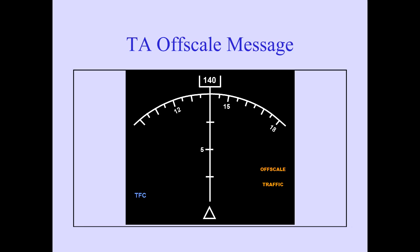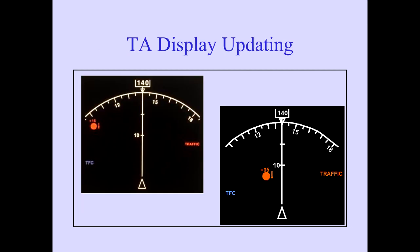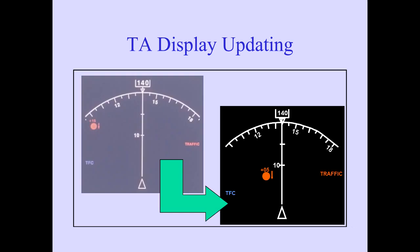The color depends on the type of advisory: RAs are red, TAs are amber. Increasing the ND range will display the intruder on the ND. The displayed position of the TA aircraft is updated continuously. This example shows an aircraft at 1030, bearing 100, range 18 nautical miles, which then progresses to 11 o'clock, bearing 120, range 9 nautical miles. The aircraft has descended from 1,500 feet above our altitude at 18 nautical miles to 500 feet above our altitude at 9 nautical miles. If current trends continue, the intruder should cross our flight path 5 nautical miles off our nose and 500 feet below our altitude, descending.